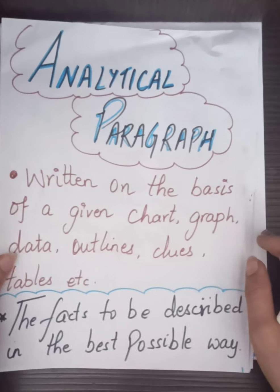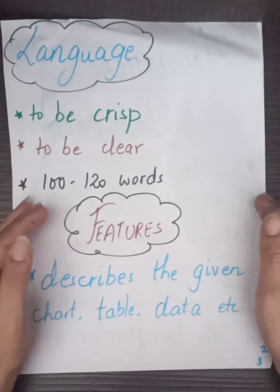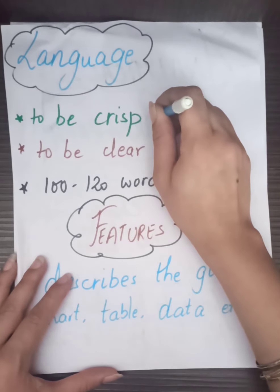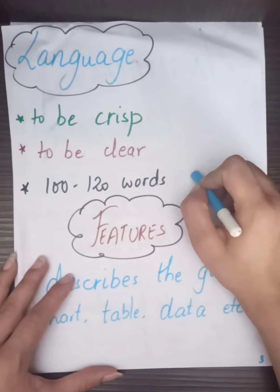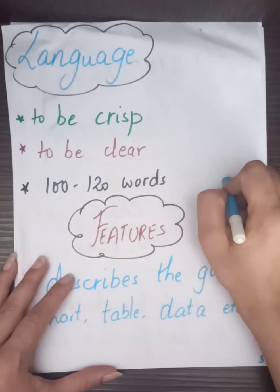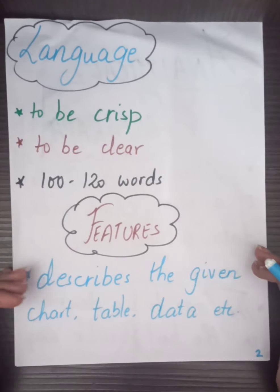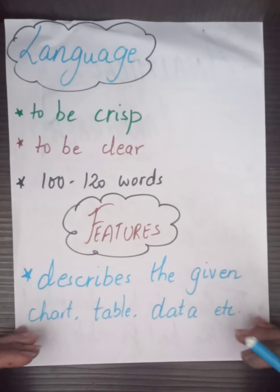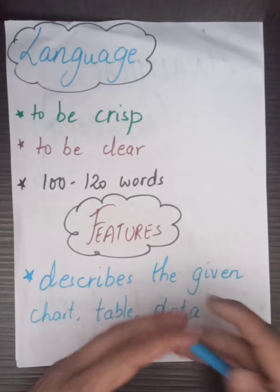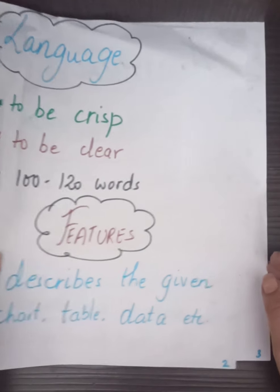We need to understand the language which we need to use while writing an analytical paragraph. The language needs to be crisp and clear. It is written in 100 to 120 words. Now let's talk about the features of an analytical paragraph. An analytical paragraph describes the given chart, table, or data. You can be given an outline, some clues, or a pie chart, and you have to describe it.